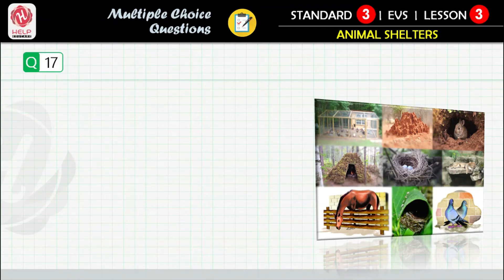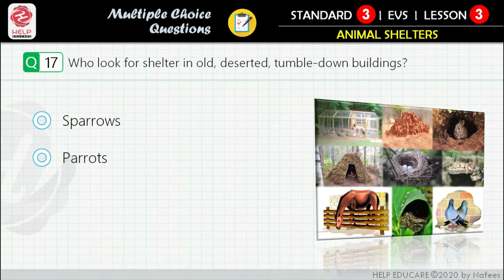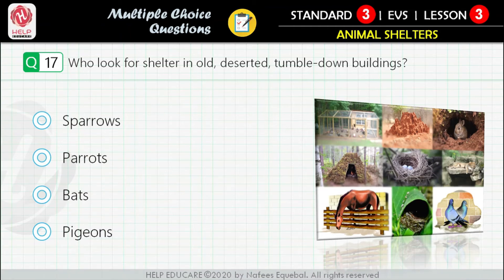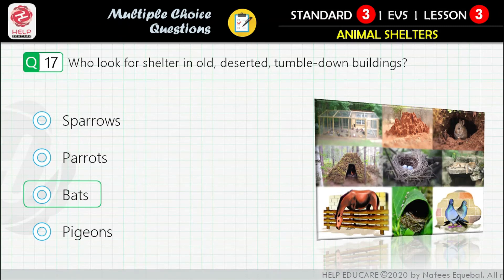Question 17: Who looks for shelter in old, deserted, tumble-down buildings? First option: sparrows. Second option: parrots. Third option: bats. Fourth option: pigeons. Correct answer is: bats.